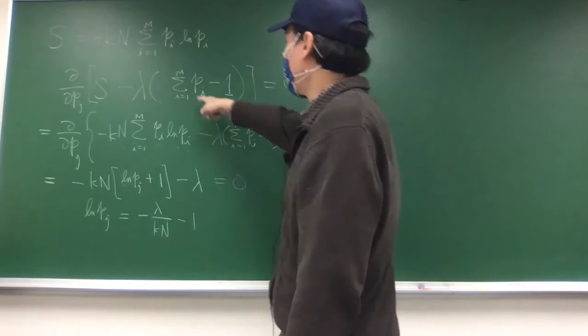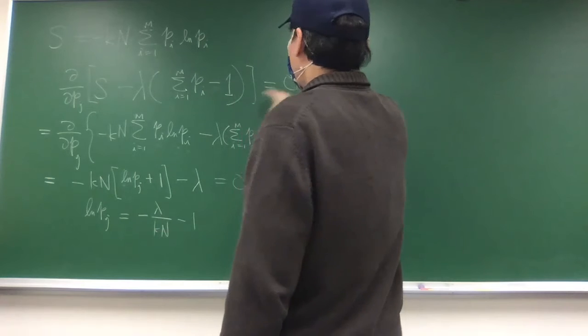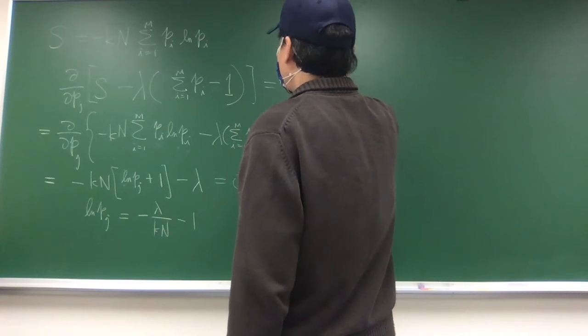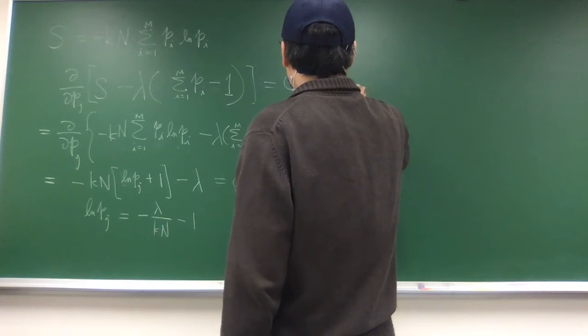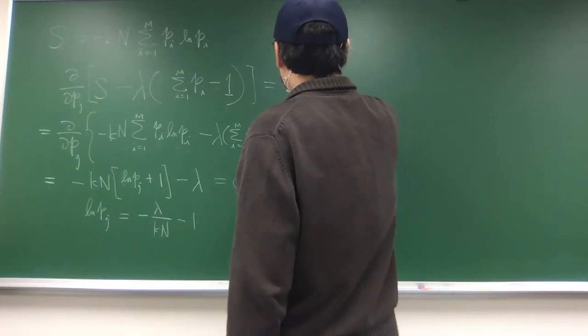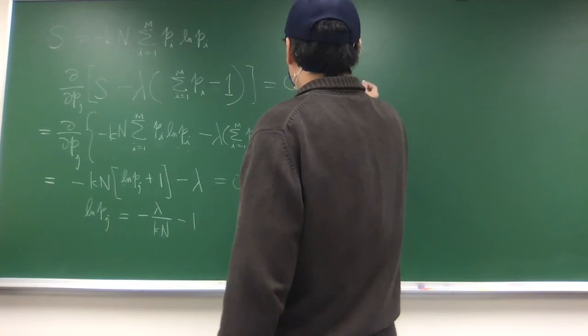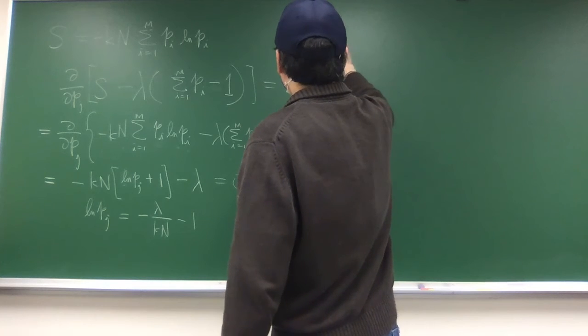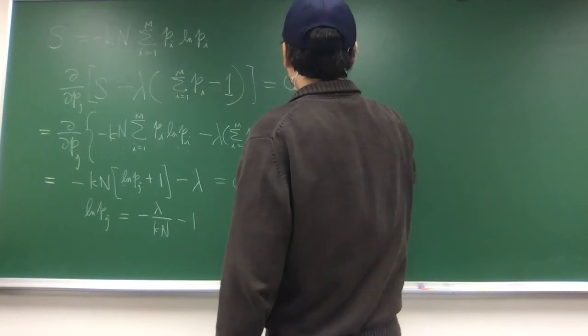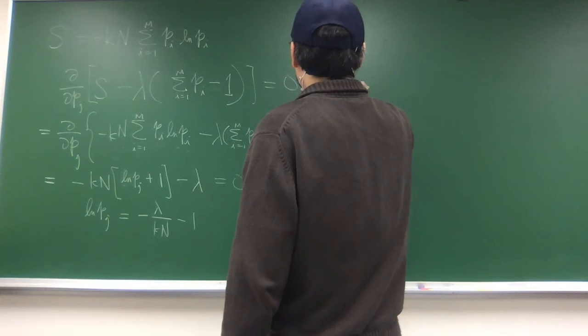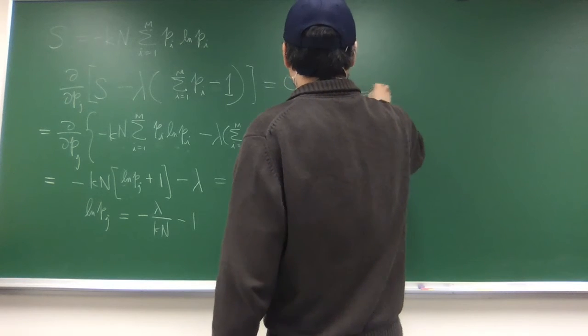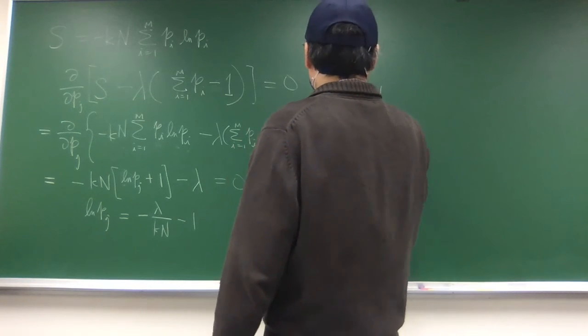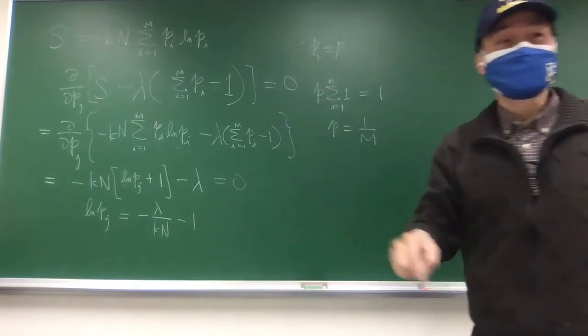So this constraint becomes sum of i equals 1 to m. P sub j is a constant, so you can pull that out and call it just p. So all the p sub i equals to just p. And sum over one, this is just m, so p is just one over m.